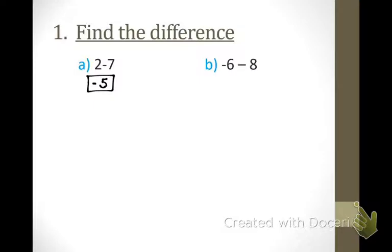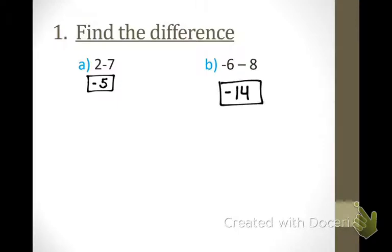Who feels comfortable to do the next one? Do I have a same sign or a different sign here? Same sign — this one is negative, and this one is also negative. Same sign, so what do we do? Add and keep the sign. When you add them together you get 14, and then you're going to keep the sign, which is negative 14.